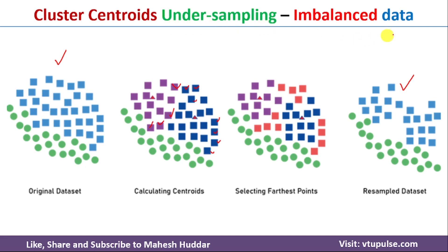Once you remove them, the dataset will look balanced, with both classes having almost equal instances. This is how we apply the Cluster Centroids algorithm, which is an under-sampling technique for handling imbalanced data. I have already discussed the remaining techniques to handle imbalanced data — the links are in the description below. I hope the concept is clear. If you like the video, please like and share with your friends, press the subscribe button for more videos, and press the bell icon for regular updates. Thank you for watching.